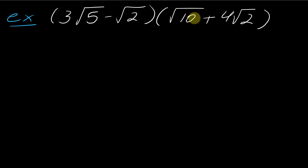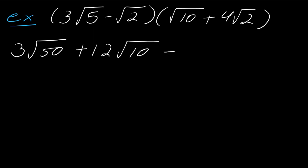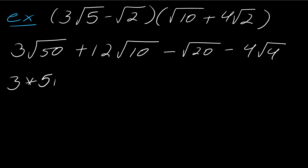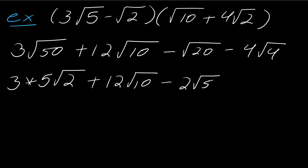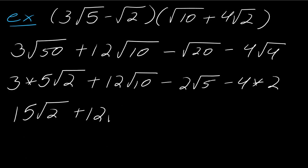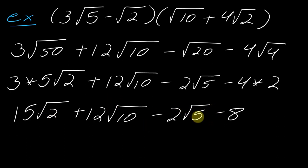So first I'm going to take this term times each term in the binomial. This term times 10 gives me 3 times the square root of 50. This term times the next gives me 3 times 4, which is 12, and under the radicals I've got 5 times 2, which is 10. Next, square root of 2 times 10 gives me negative square root of 20, and then negative 4 times the square root of 4. So this simplifies: 3 times 5 times the square root of 2 is 15 root 2; 12 times the square root of 10 stays; square root of 20 simplifies to 2 times the square root of 5; and the square root of 4 times 4 gives 8. In the end: 15 root 2 plus 12 root 10 minus 2 root 5 minus 8. If you have these in a slightly different order that's fine, but you need all the signs right.